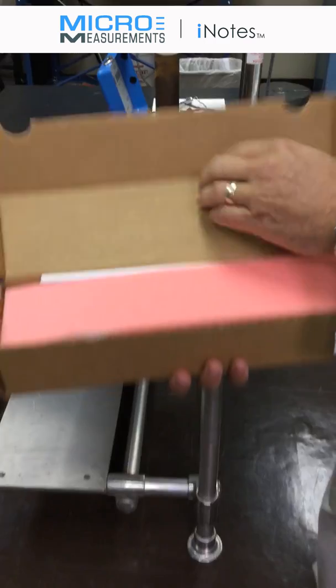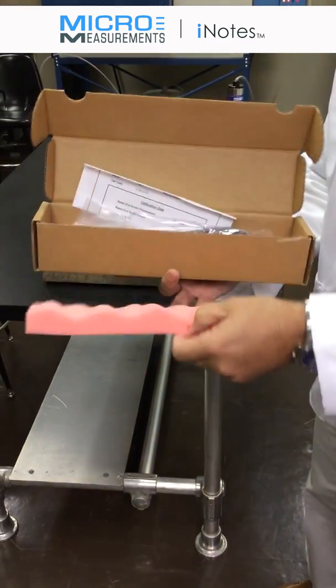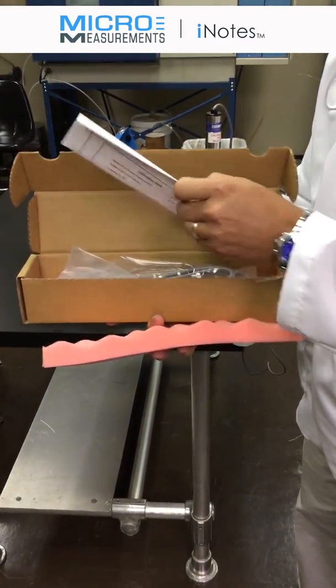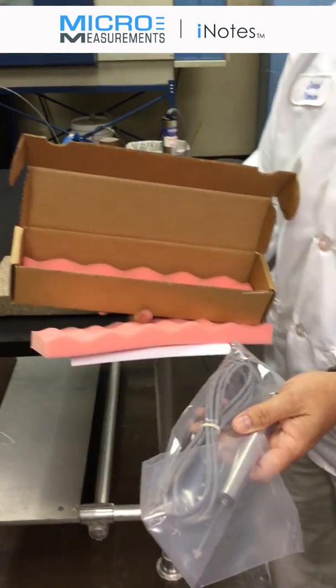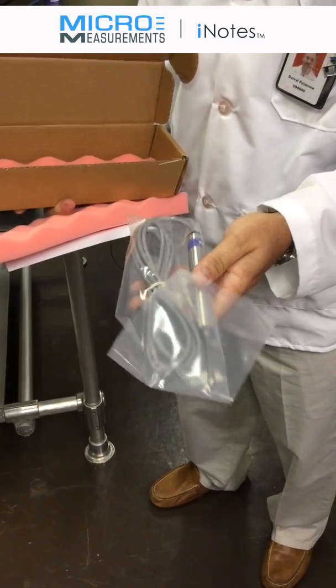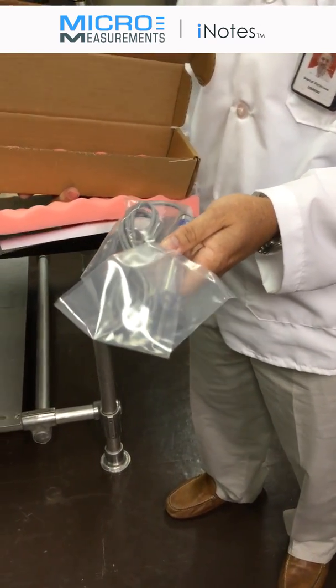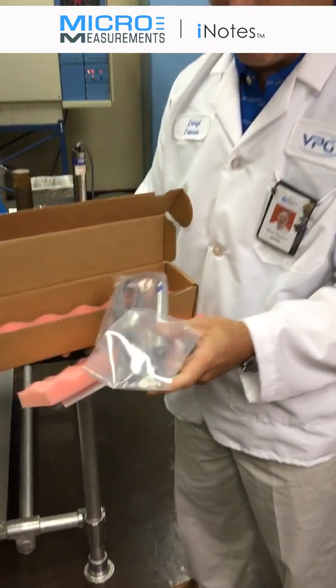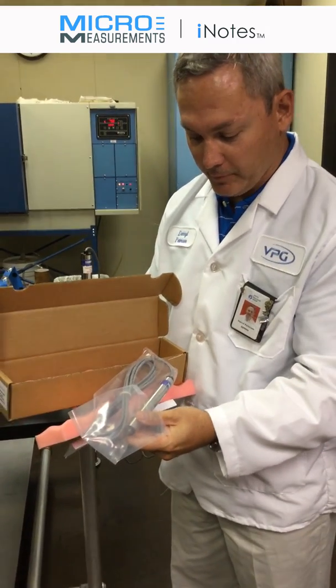As you open it up, you'll see the nice foam packaging to protect it while it's being shipped to you, as well as the device itself. This happens to be one of our HS50 linear displacement sensors, and the 50 corresponds to the displacement range that it can measure in millimeters.